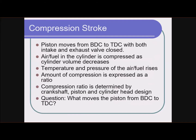Then we talked about the compression stroke and compression ratio — the difference in volume between when the piston is at bottom dead center versus top dead center. If the cylinder is 10 times as large with the piston at the bottom as with the piston at the top, that's a 10-to-1 ratio. We looked up several compression specs during last week's compression tests and cylinder leakage tests. Normal ratios are 8-to-1, 10-to-1, up to about 12-to-1 — 12-to-1 is getting kind of high.